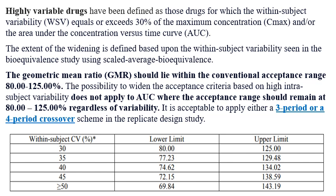Regarding widening of Cmax limits: highly variable drugs show within-subject variability equal to or more than 30% for Cmax or AUC. The extent of widening is defined based on the within-subject variability seen in the bioequivalence study using scaled average bioequivalence with a replicate design. The geometric mean ratio (GMR) should remain within the conventional acceptance range of 80 to 125%. Importantly, the possibility to widen acceptance criteria based on high intrasubject variability does not apply to AUC — the AUC acceptance range must remain within 80 to 125% regardless of variability. Only Cmax limits may be widened, not AUC limits.